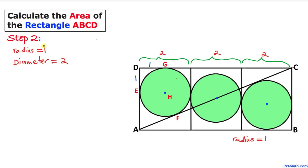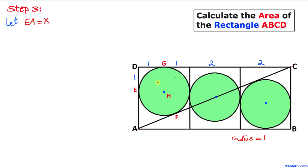We know that the radius of the circle is one, so the diameter is going to be twice that — meaning it's going to be two. So for this circle the diameter is two, for this circle the diameter is two as well, and this one the diameter is two also.